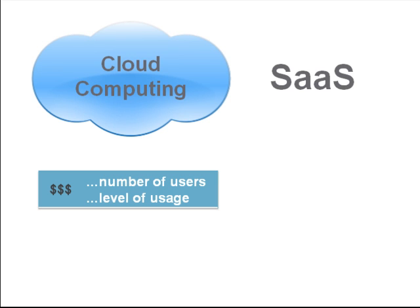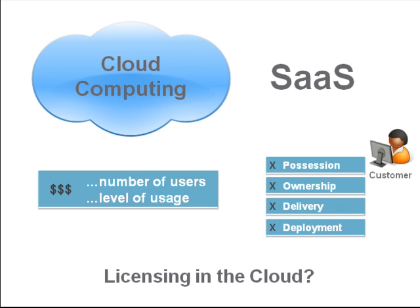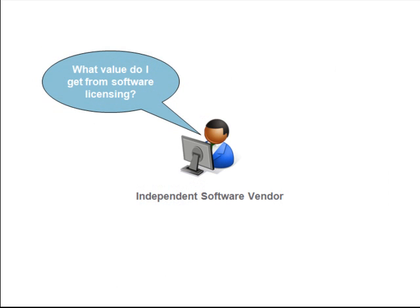The customer no longer owns the software. In fact, the customer no longer even gets the software in the traditional sense. So without possession or ownership or even physical distribution of the software, are things like licensing, compliance and code protection still important? Do they still have a role to play? And if they do, how should licensing even work with the cloud's different business models, different software architectures and different distribution and deployment schema? To answer these questions, we need to return to basics and consider why licensing is a worthwhile and valued activity for software providers.